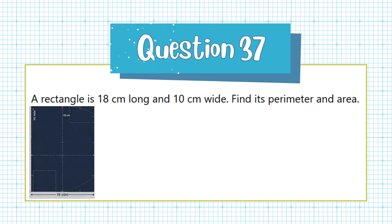Question 37. A rectangle is 18 cm long and 10 cm wide. Find its perimeter and area.